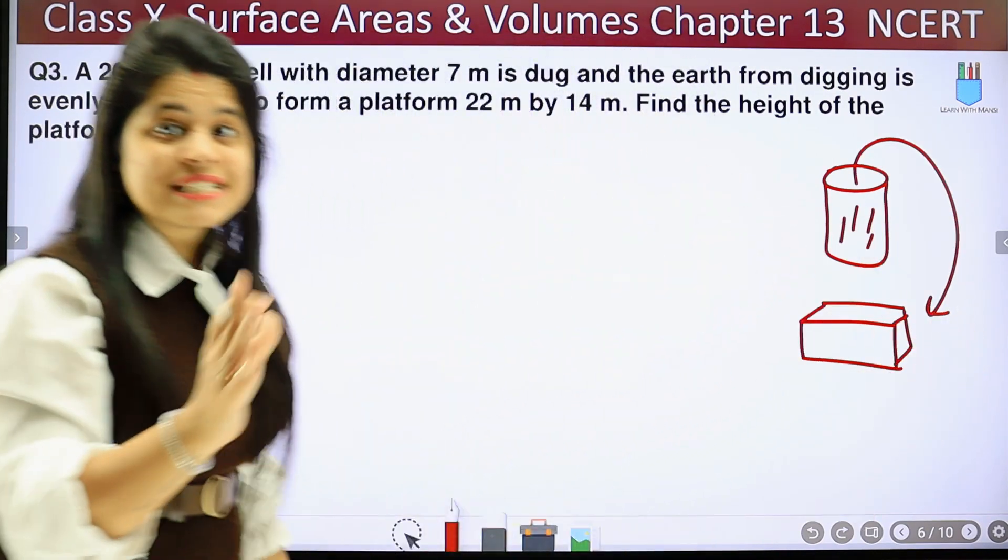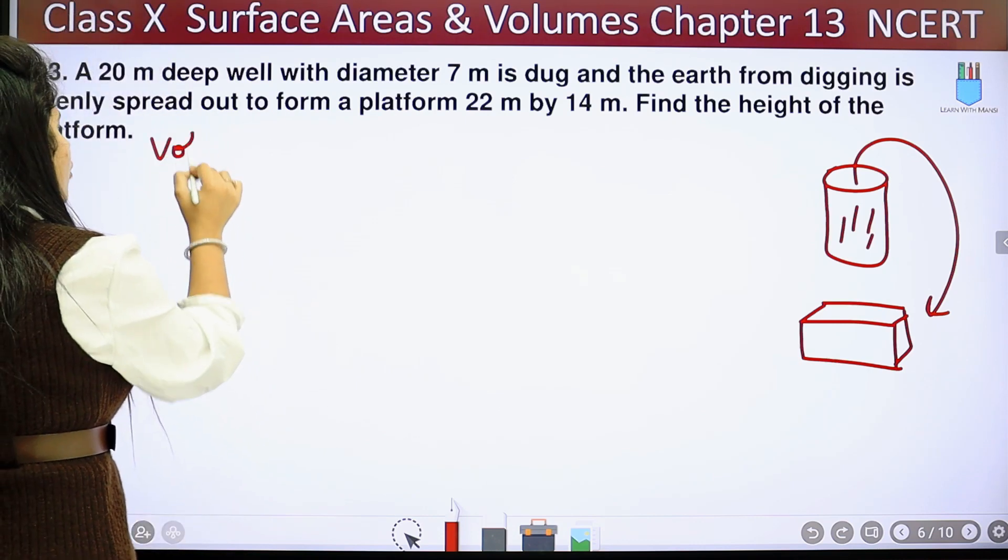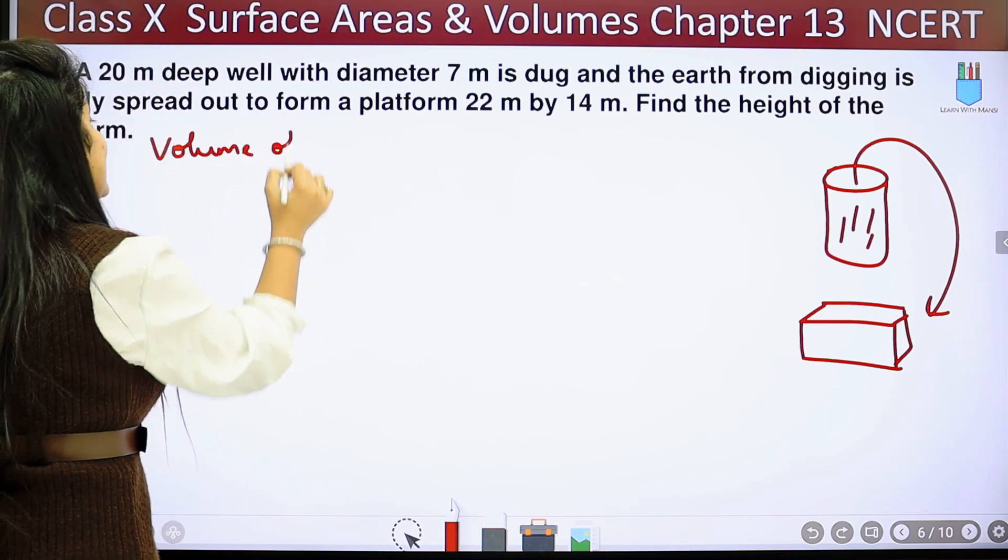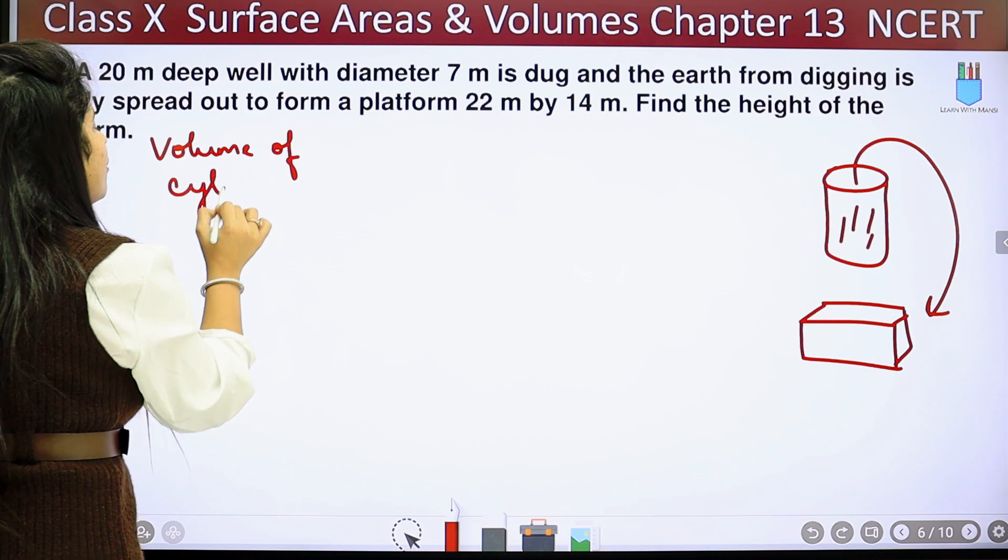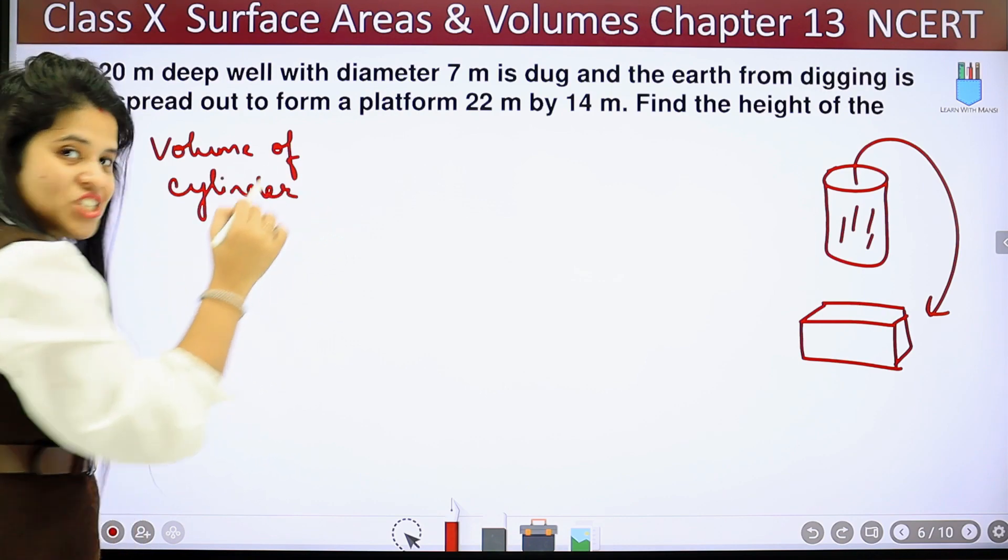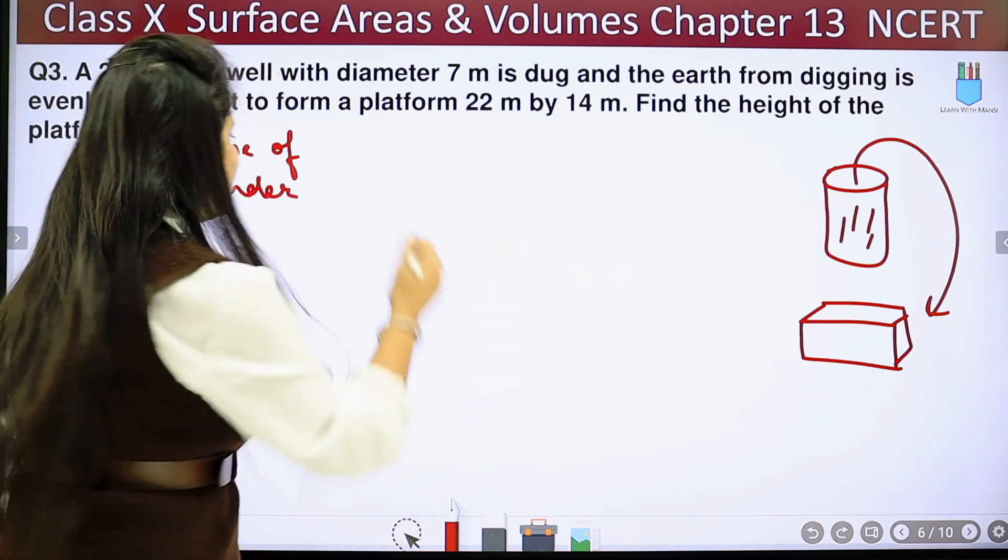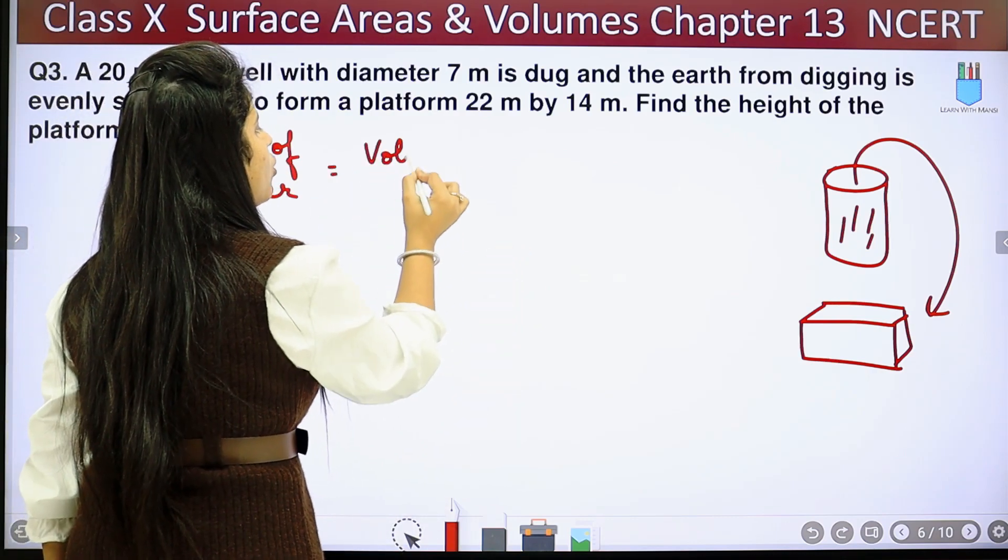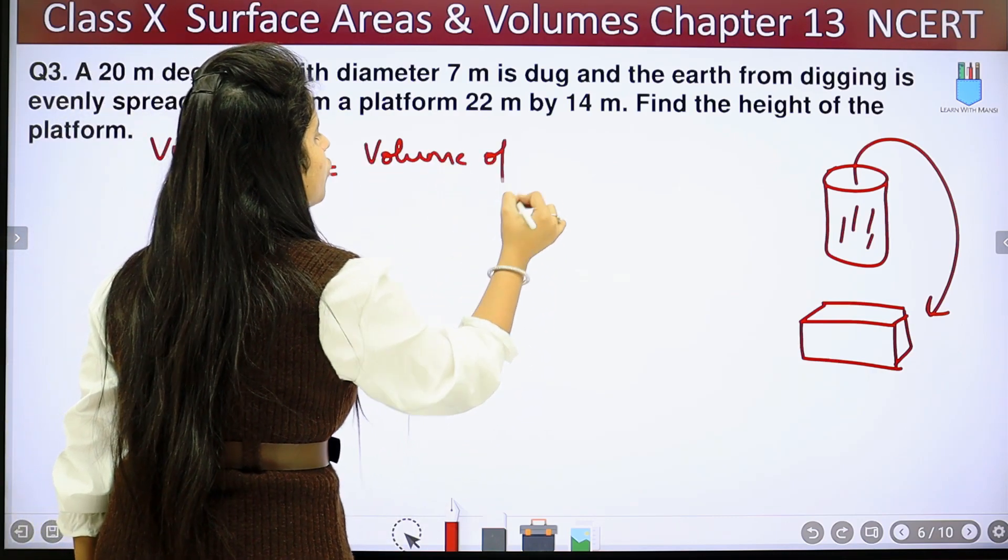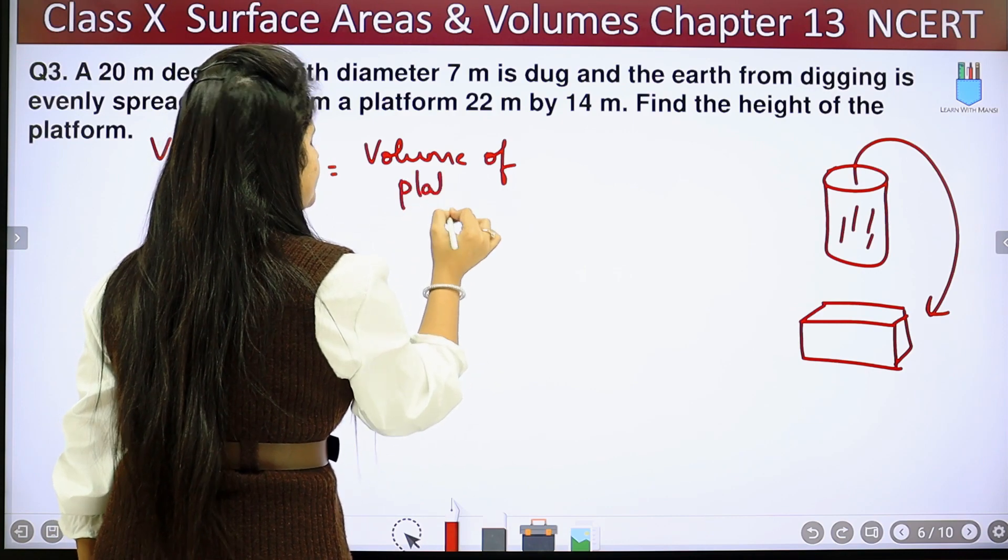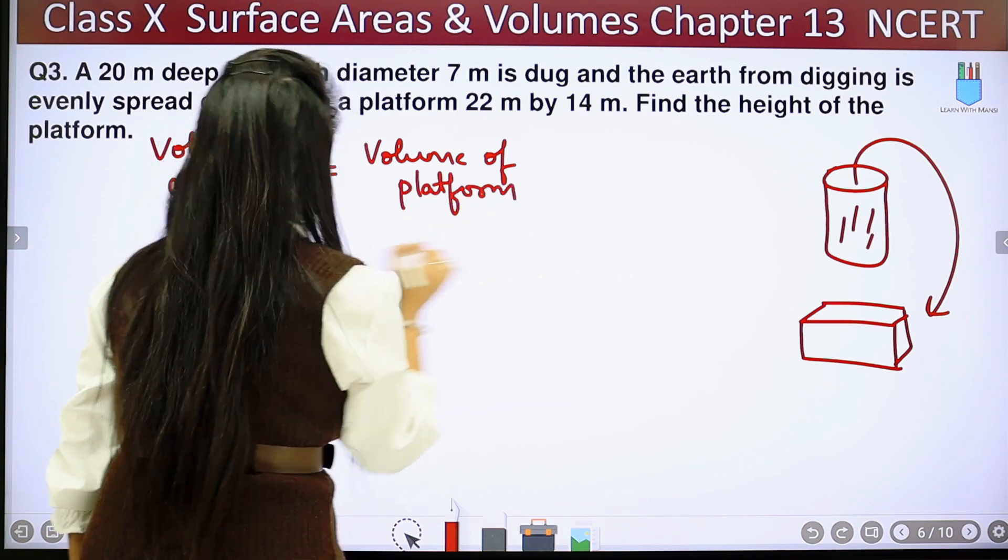It means volume of the cylinder - where did the cylinder come from? It is our well's shape, cylindrical shape. So as much as it comes from the middle, it will be the volume of the platform. So, volume of platform, which is our cuboid basically.